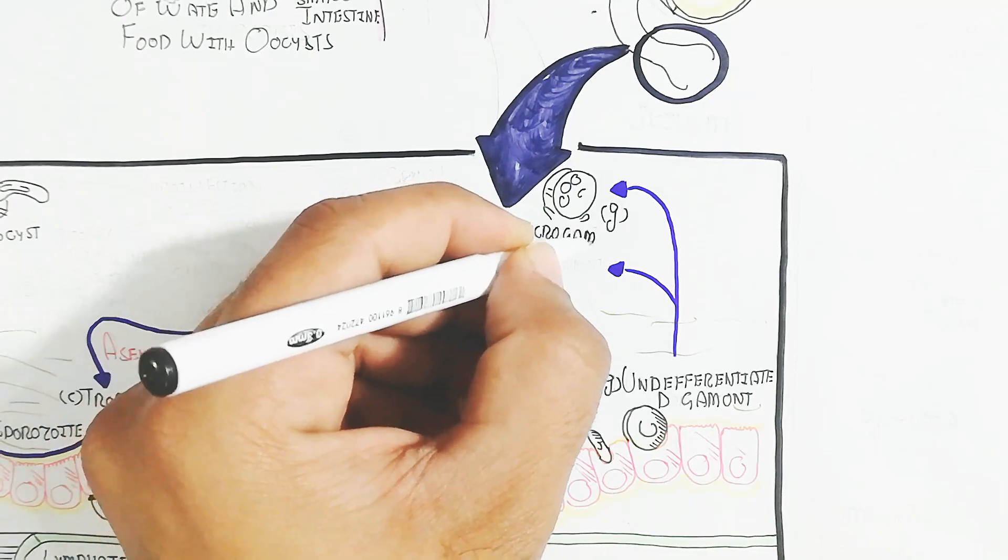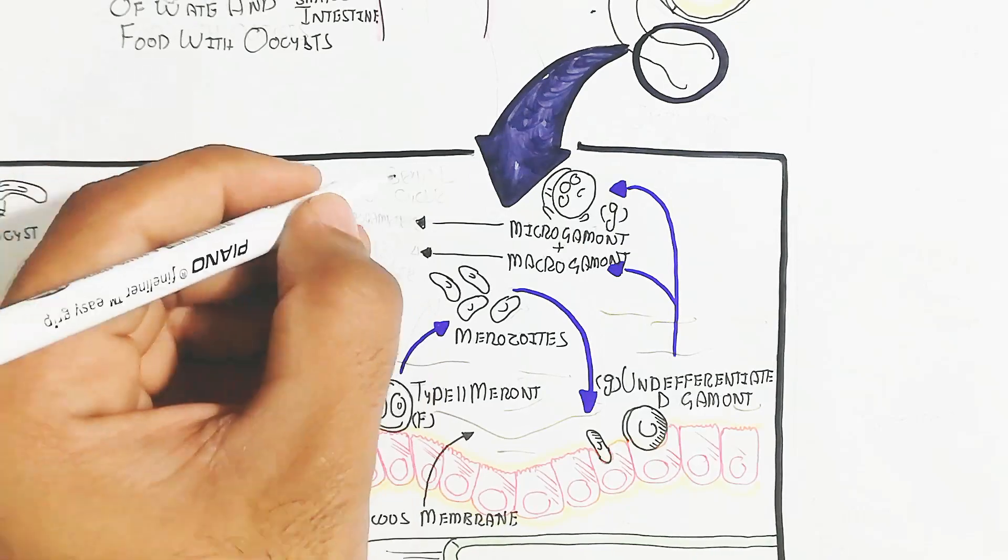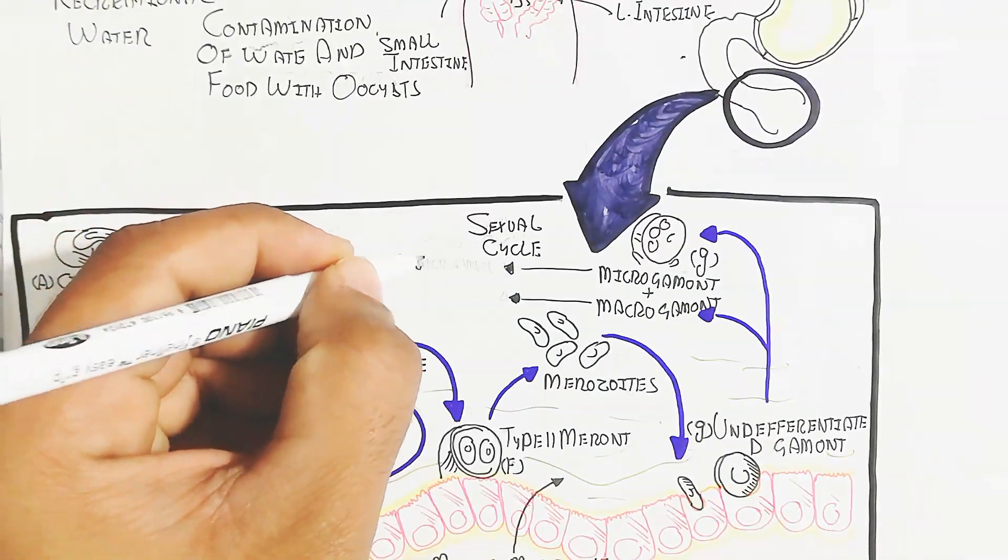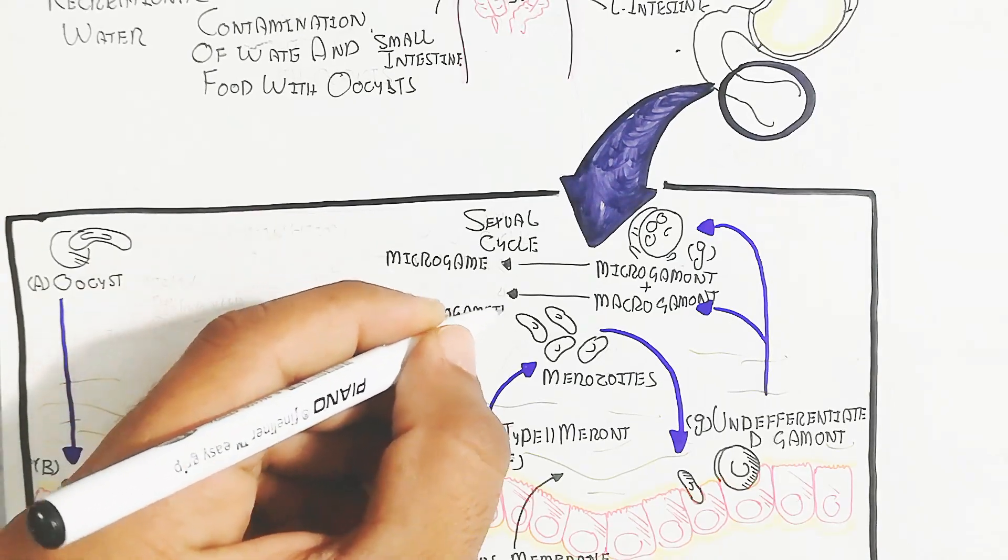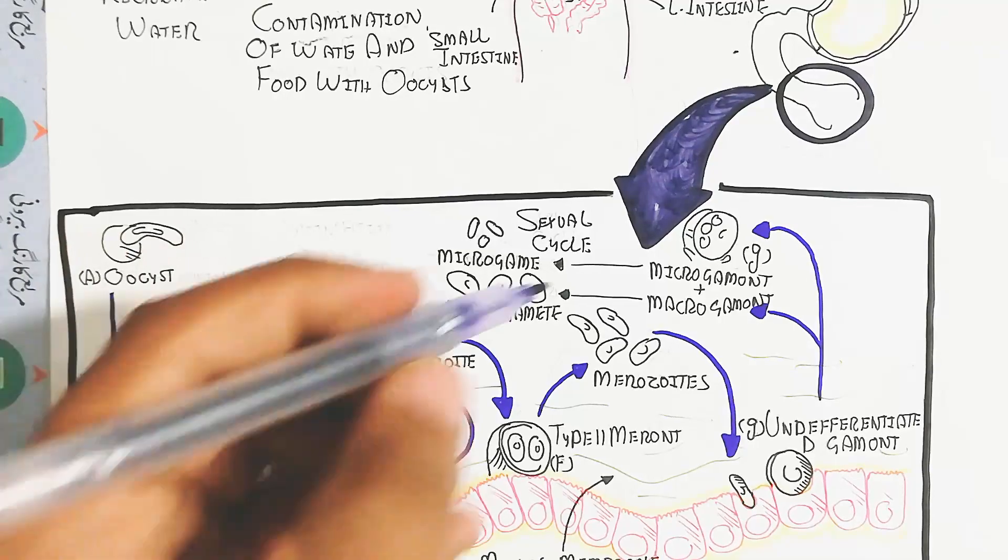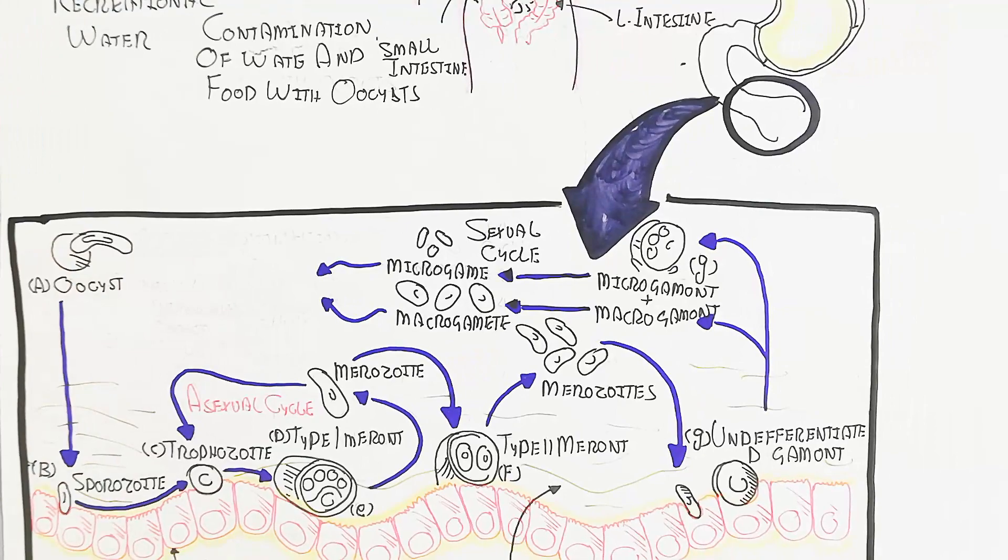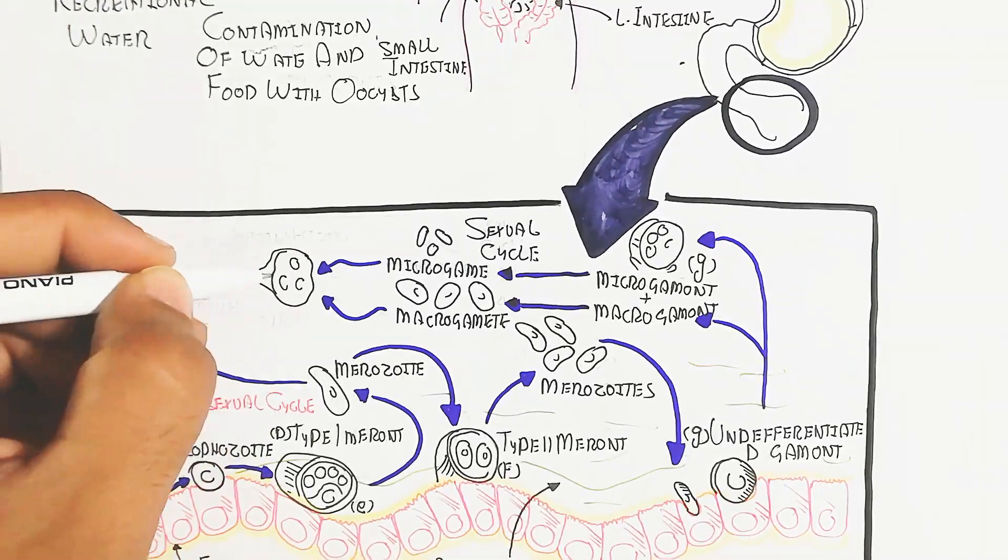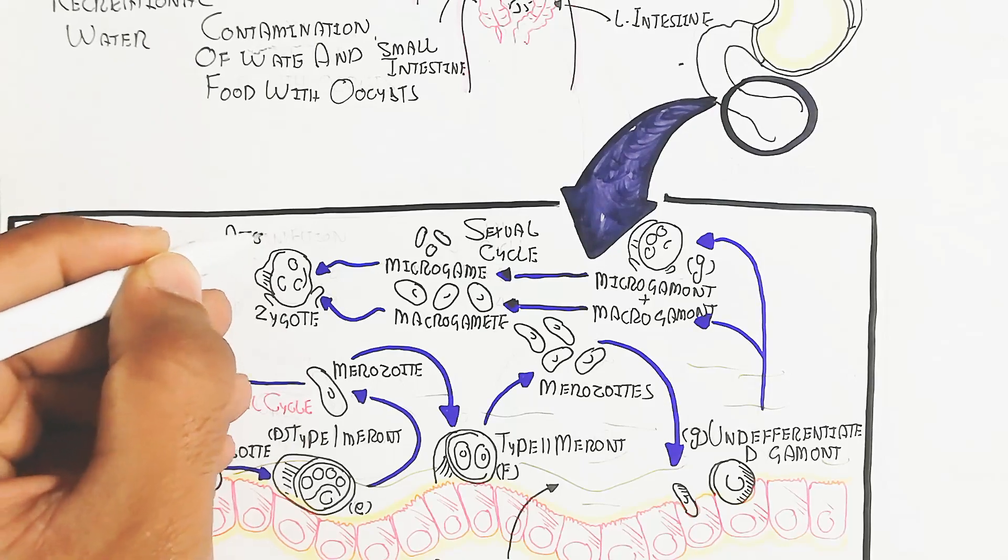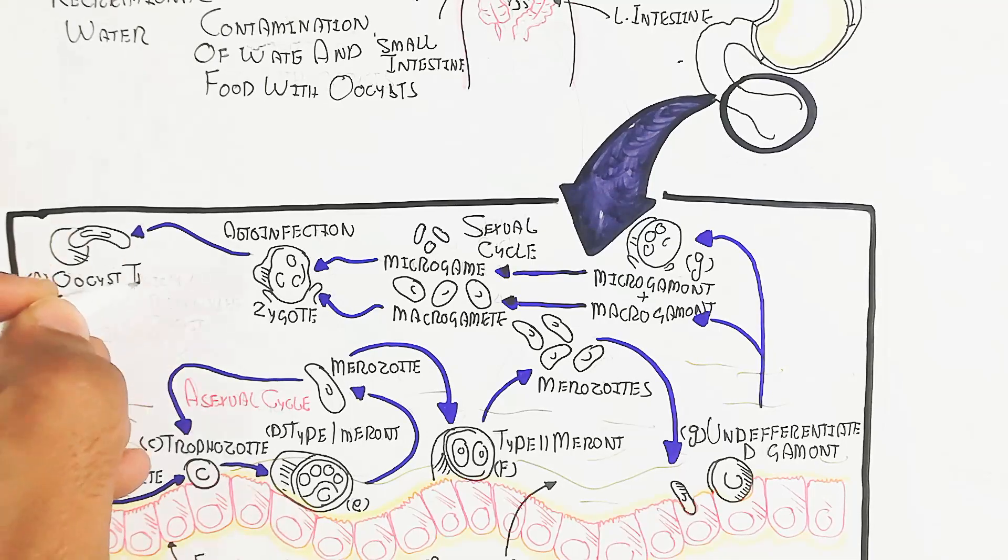This macrogamete or microgamete is the result of sexual reproduction to produce the zygote. After fertilization, this leads to auto-infection to produce the oocyst, both thick and thin-walled. This is the cycle for reproduction to increase their individuals, increase their species in the lumen.